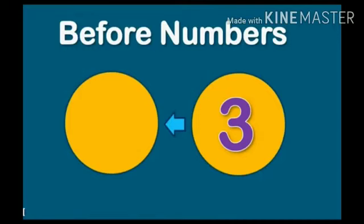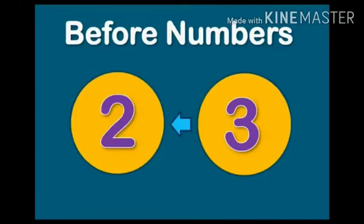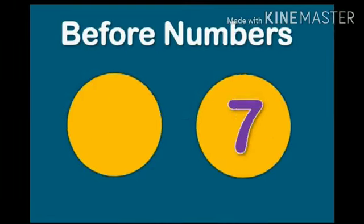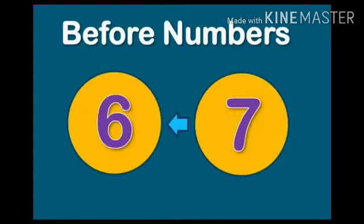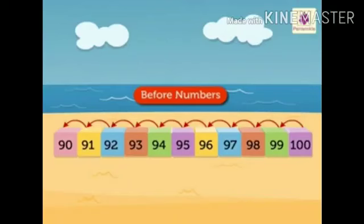Let's take some more examples of what comes before. Before 3 — yes, you are right, 2 comes before 3. What comes before 7? Let us count back: 7, 6. So 6 comes before 7. Let's take some more examples of 2-digit numbers also.